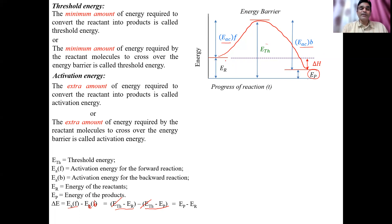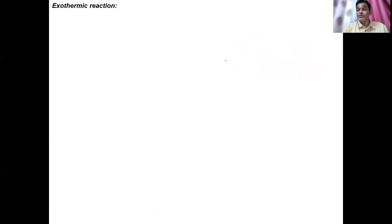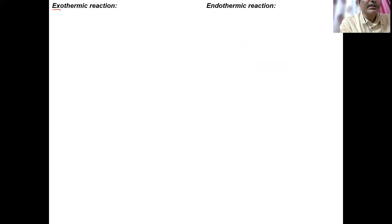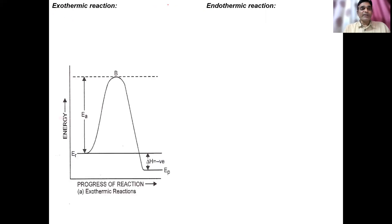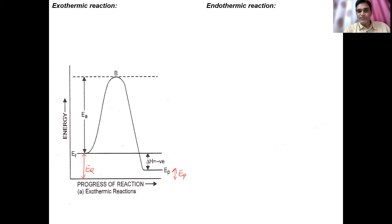The delta H value is negative for an exothermic reaction, meaning heat is evolved. Now let's define both types: exothermic and endothermic. 'EX' means exit — energy exits or is released. 'EN' means entry — energy enters or is absorbed. So exothermic reaction: energy of reactant is more, energy of product is less, some energy is released, and delta H is negative.